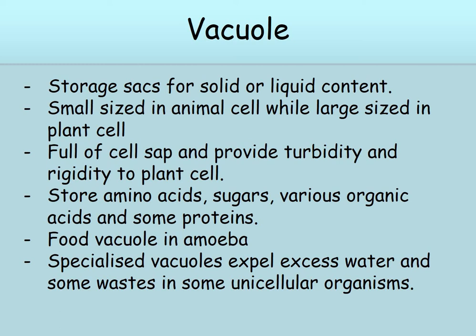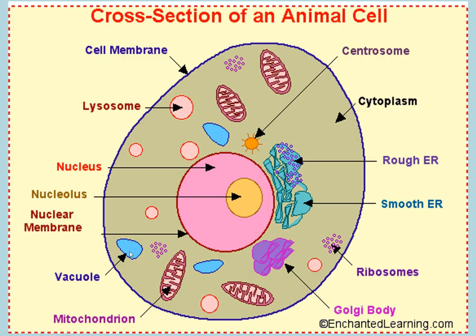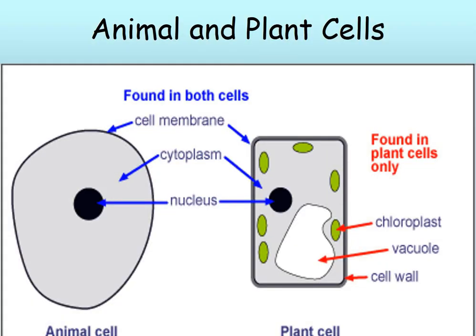There are some specialized vacuoles that expel excess water and some waste in some unicellular organisms. Here you can see some small sized vacuoles in animal cell. Now you will see the difference between animal and plant cells.